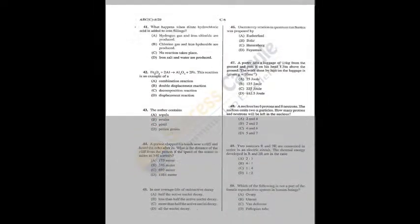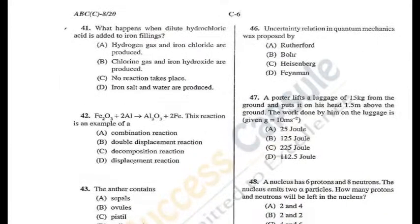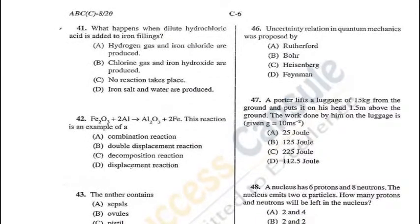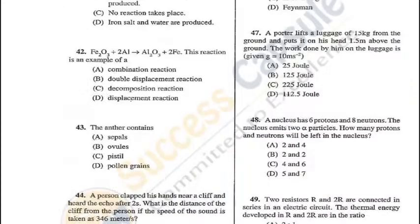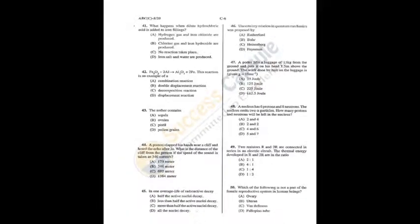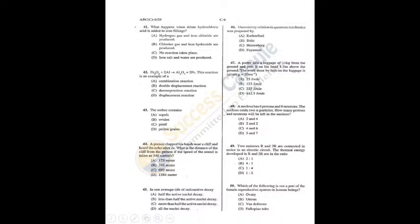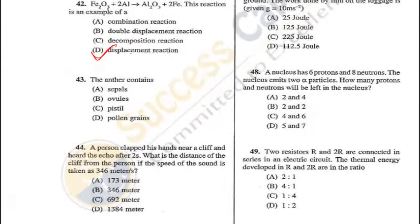Question 41: When dilute hydrochloric acid is added to iron filings, hydrogen gas and iron chloride are produced — A is the correct answer. Question 42: The given chemical reaction is an example of a displacement reaction. Aluminium, being more reactive than iron, displaces iron, resulting in the formation of aluminium oxide — D is the answer. Question 43: The anther contains pollen grains — D is the correct answer.